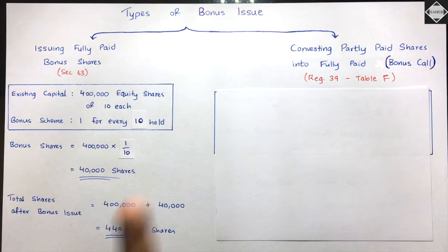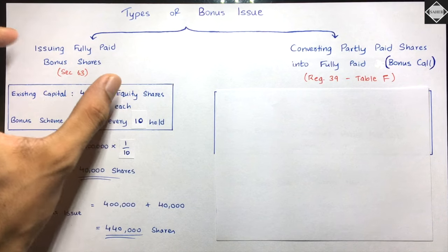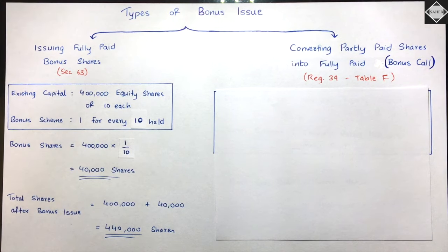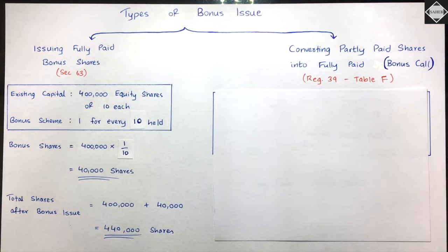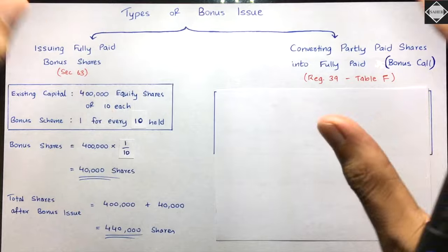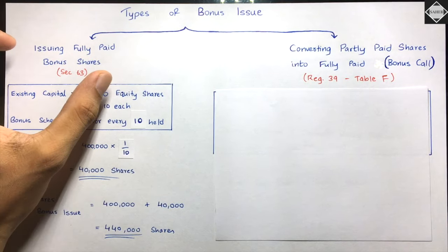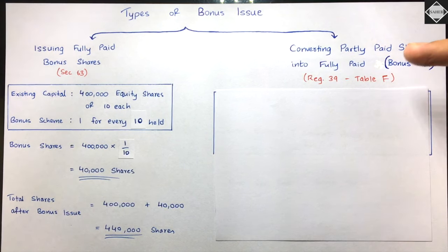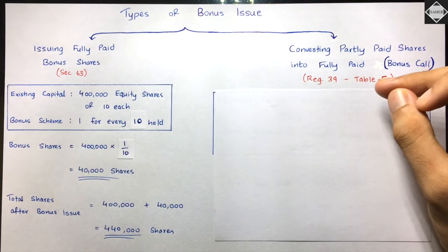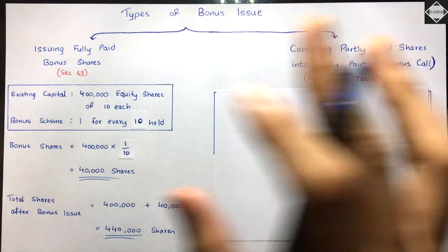Now let's discuss the two types in detail. The first type - issuing fully paid-up bonus shares to existing shareholders - is regulated by Section 63 of the Companies Act. The second type - converting partly paid-up shares into fully paid-up by way of bonus call - is regulated by Regulation 39 of Table F under Schedule 1 of the Companies Act.